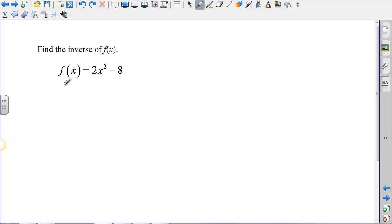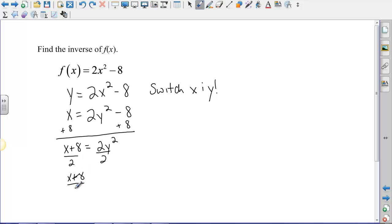If we have a function in function notation, f(x) = 2x² - 8, the first step is to replace f(x) with y, because that's kind of what it means anyways. The second step, then, is to switch x and y. So that's going to give me x = 2y² - 8. Now, again, we need to solve for y. So I'm going to add 8 to both sides, and I'm going to get x + 8 = 2y². I'm going to divide both sides by 2, and I'm going to have (x + 8)/2 = y².